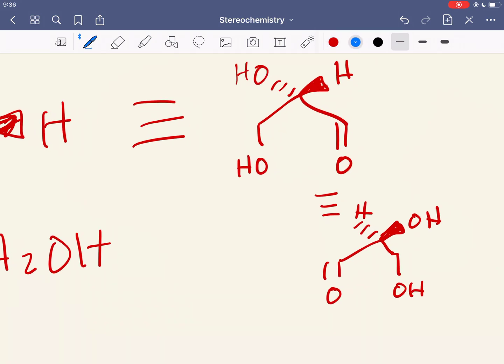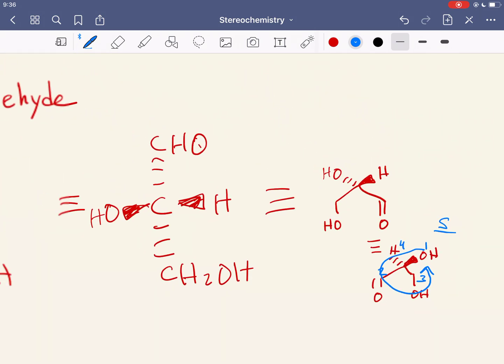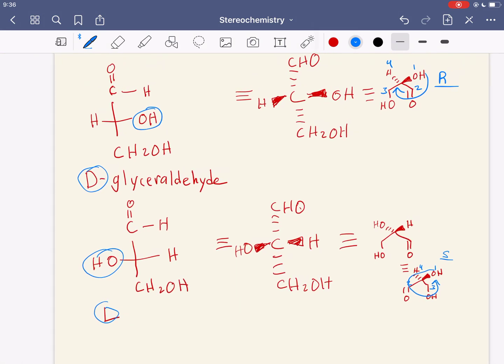This, now I can assign priority to. So hydrogen is 4, this is 1, this is 2, this is 3. Going from 1, 2, 3, that is counterclockwise. So this guy down here is S. Zoom out so you guys can see everything.